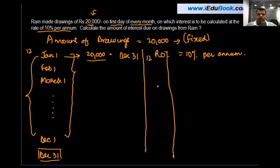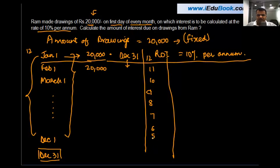In other words, we're using it for 12 months. Similarly for February 1, Rs. 20,000 is the drawing amount used until December 31, which means 11 months. Similarly for March: 10, 9, 8, 7, 6, 5, 4, 3, 2, and 1.